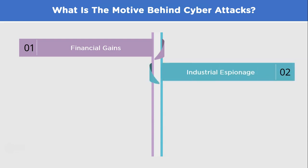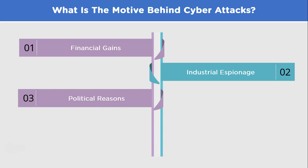The second reason is industrial espionage. In the corporate world, cyber attacks are sometimes carried out to gain a competitive advantage by stealing proprietary information, trade secrets, and intellectual property. Competing companies and nation-state actors may target organizations to obtain valuable information and insights.